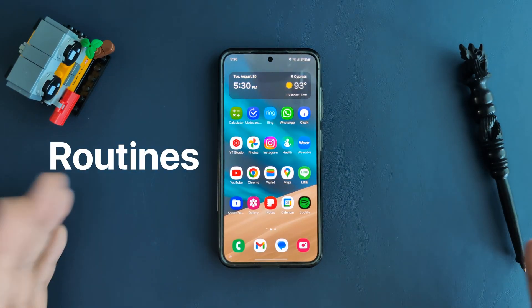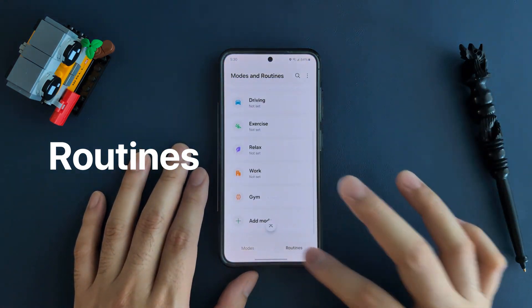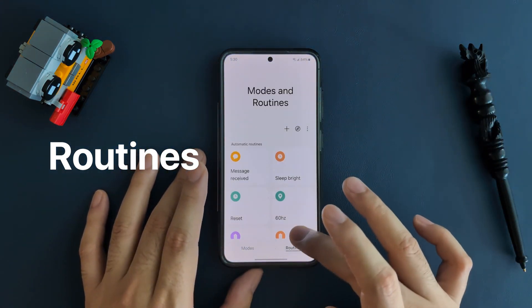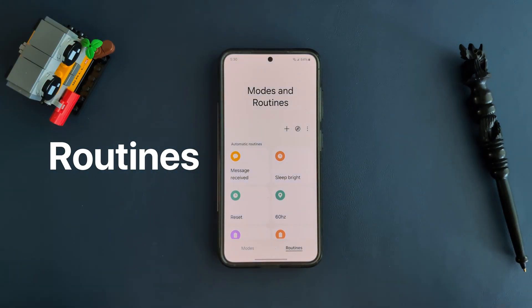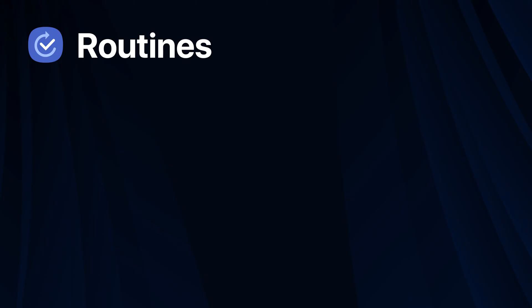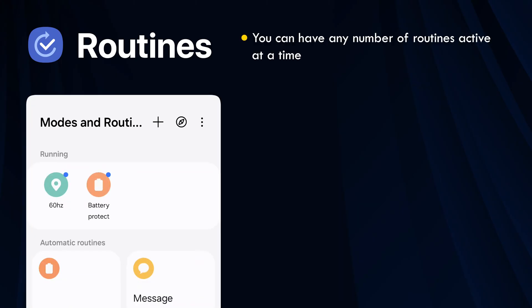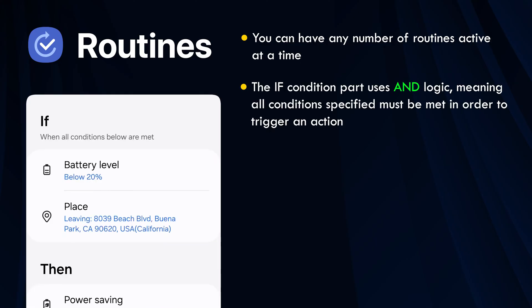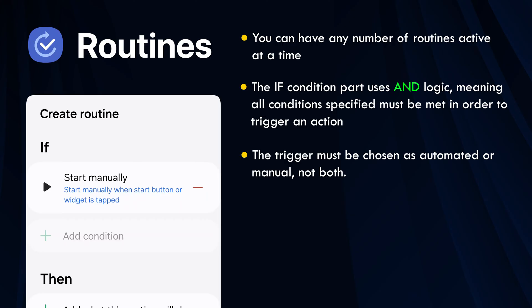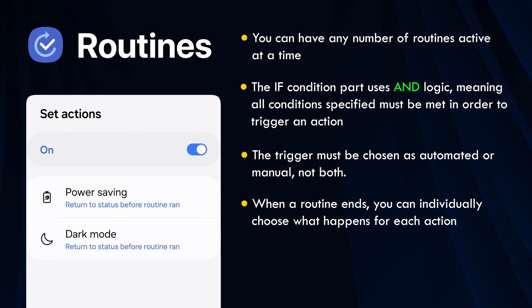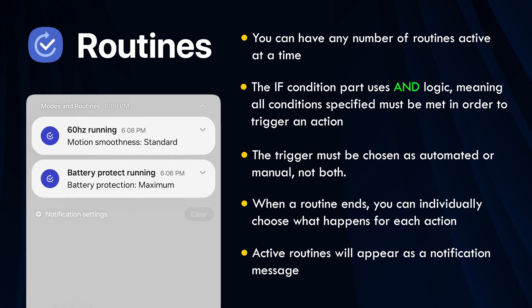So routines — what are they? You can think of routines as setting what you want to override, or what setting you want to add when a specific condition is triggered. Here are the details of how routines work. You can have any number of routines active at a time. The if condition part uses AND logic, meaning all conditions must be met in order to trigger an action. The trigger must be chosen as automated or manual. When a routine ends, you can individually choose what happens for each action. And active routines will appear as a notification message.